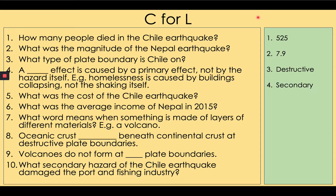Four: secondary effect. Five: what was the cost of the Chile earthquake? About 30 billion dollars. Six: what was the average income of Nepal in 2015? About 725 dollars. Seven: what word means when something is made of layers of different materials, for example a volcano? A composite.